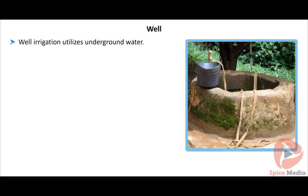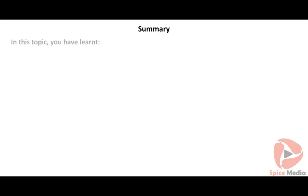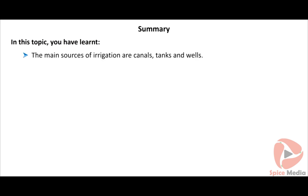Well irrigation utilizes underground water. Well irrigation covers fifty-two percent of the irrigated area in the state. Wells are classified into surface wells and tube wells.